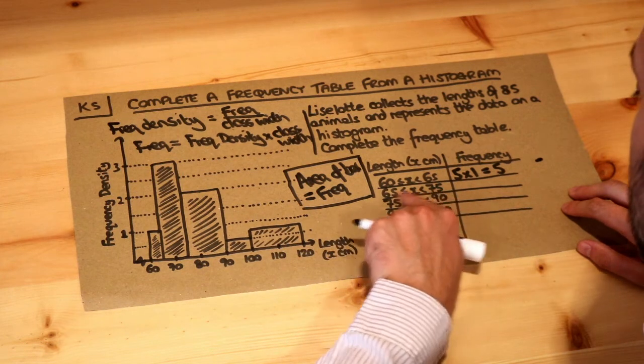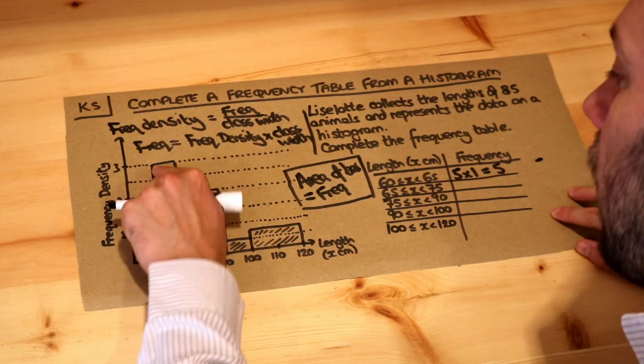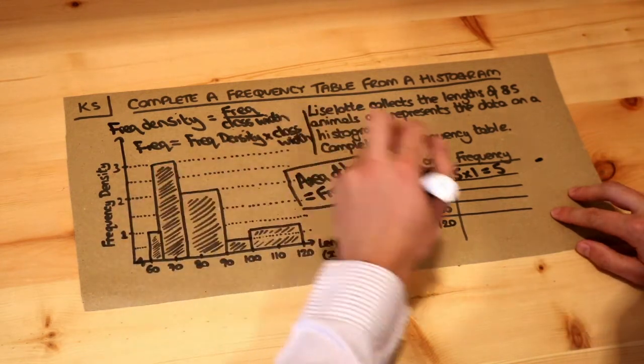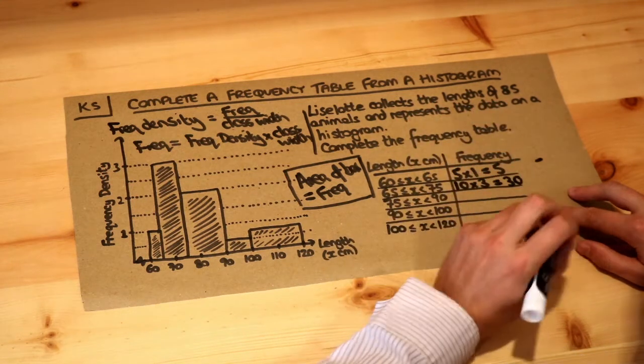What about the next one? 65 to 75, that's a width of 10. The height of the bar, if you read it off, is 3, so we do 10 times 3, which means we've got 30 animals.